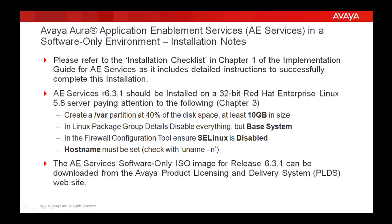Please refer to the installation checklist in Chapter 1 of the Implementation Guide for AE Services, as it includes detailed instructions to successfully complete this installation. AE Services Release 6.3.1 should be installed on a 32-bit Red Hat Enterprise Linux 5.8 server, paying attention to the following covered in Chapter 3 of the above-mentioned document.